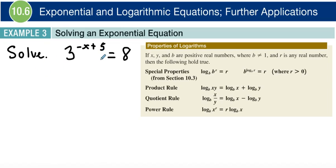And the reason why we do that is so that we can have common logs on both sides. So we're going to have log of 3 to the negative x plus 5 is equal to log of 8.